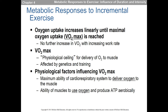VO2 max is a physiological ceiling for delivery of oxygen to muscle, and it is affected by genetics and training. Typically through training we can only alter our VO2 max by around 5 to 15, maybe 20%. It does seem to be fairly genetic, as shown clearly in twin studies by Claude Bouchard.